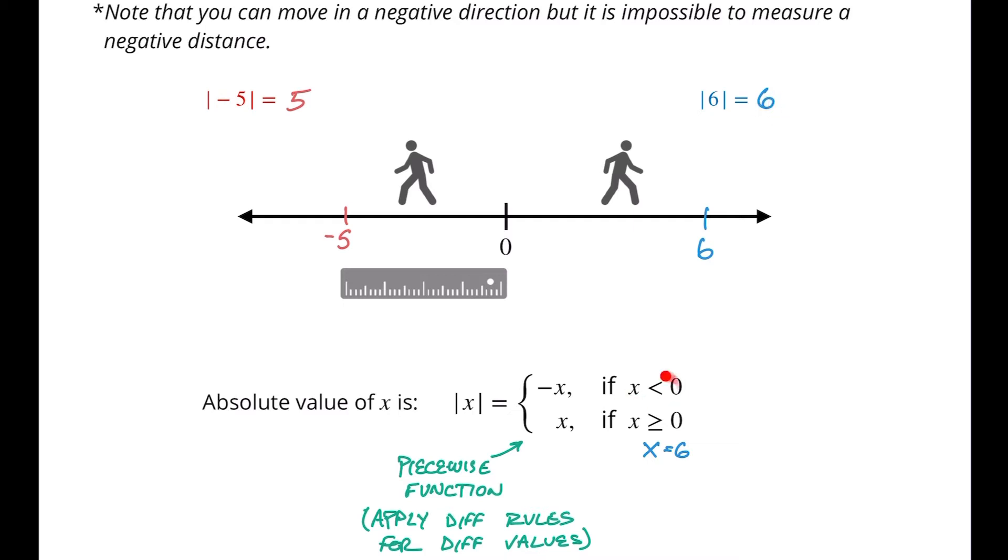If X is less than zero, so let's say X is equal to negative five, that's less than zero. Take the opposite of X. So that's saying take the opposite of negative five. Then the opposite of negative five is of course just five, which is what we have up here.